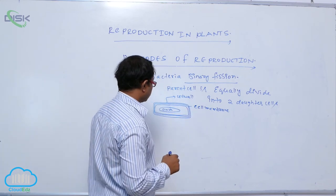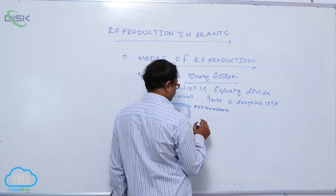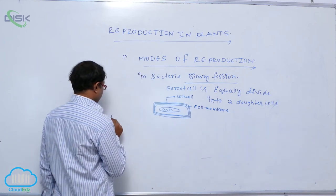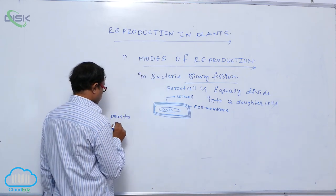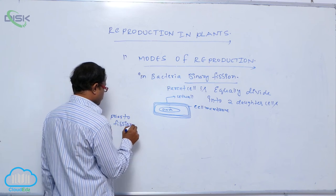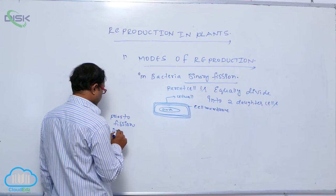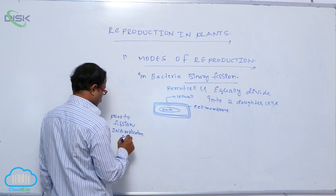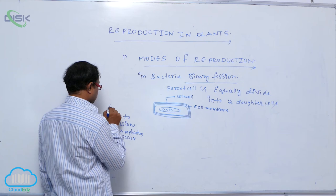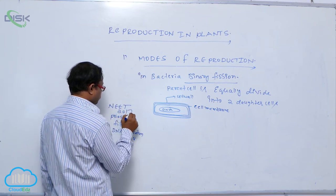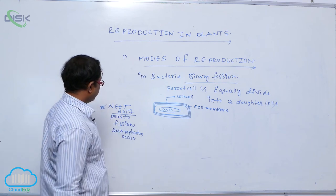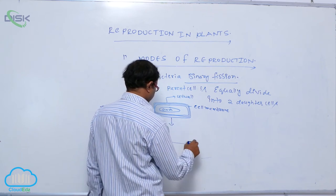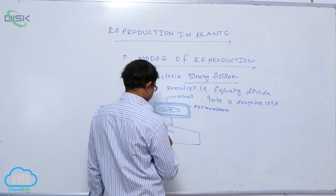Before Fission, DNA undergoes replication. Prior to Fission, which processes occur? DNA replication occurs. In the DNA replication process, DNA undergoes replication.